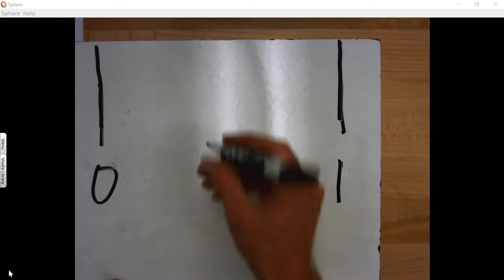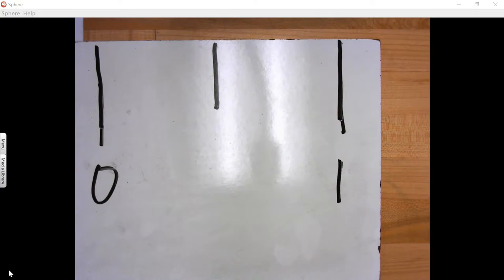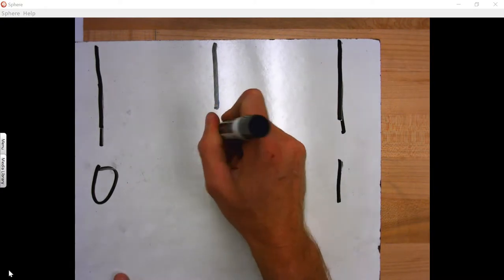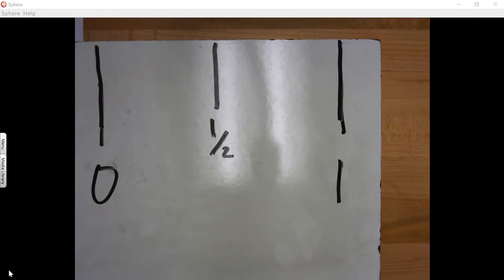The next longest lines that you're going to see on there are right in the middle, and they are one half. And that one half is the longest line because halves are the next biggest segment.